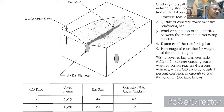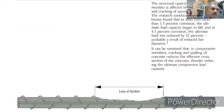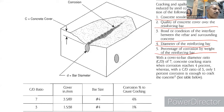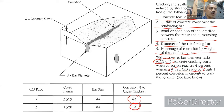The cracking depends on the concrete tensile strength, quality, cover, bar diameter, and percentage of corrosion by weight of the reinforcing bar. For a cover-to-bar-diameter ratio of 7, four percent corrosion is sufficient to cause cracking. If the cover depth is very small, only one percent corrosion is sufficient to crack the concrete. Due to this expansion, delamination and spalling occur.